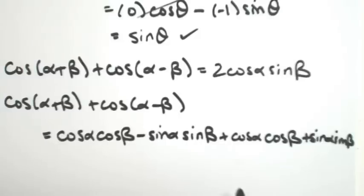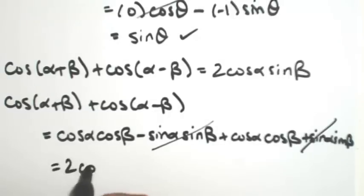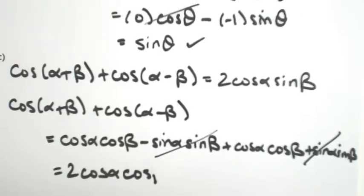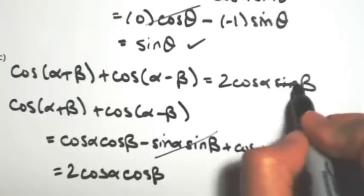And at this point, we can see that sine alpha, sine beta is going to cancel. So I have a plus and a minus, so now we're left with 2 cosine alpha, cosine beta. Which is actually what I was trying to show. Thank you.